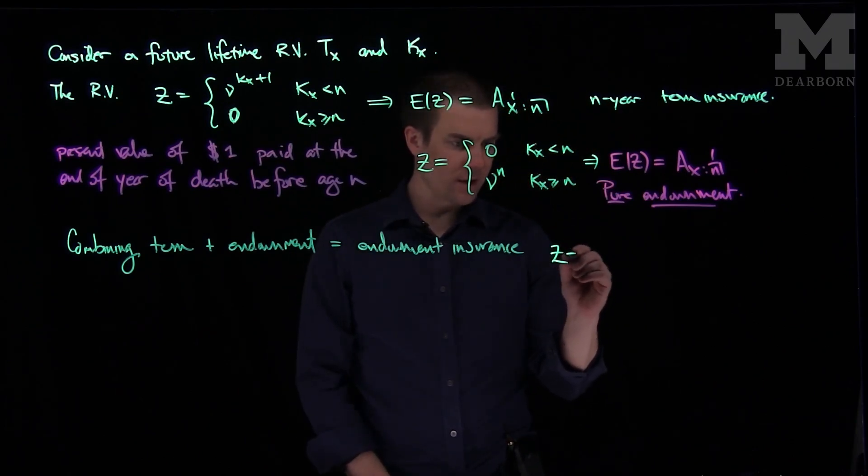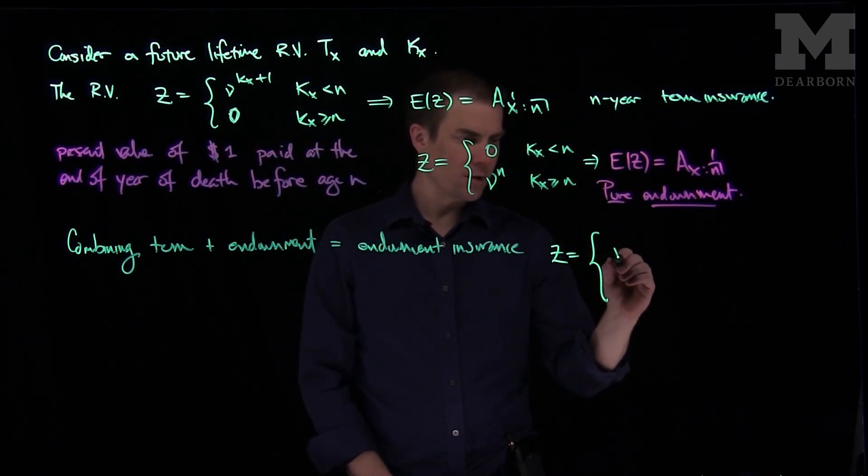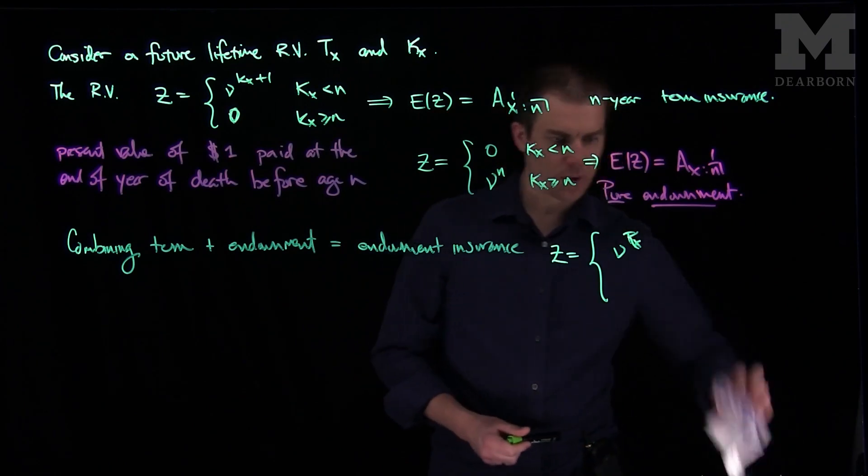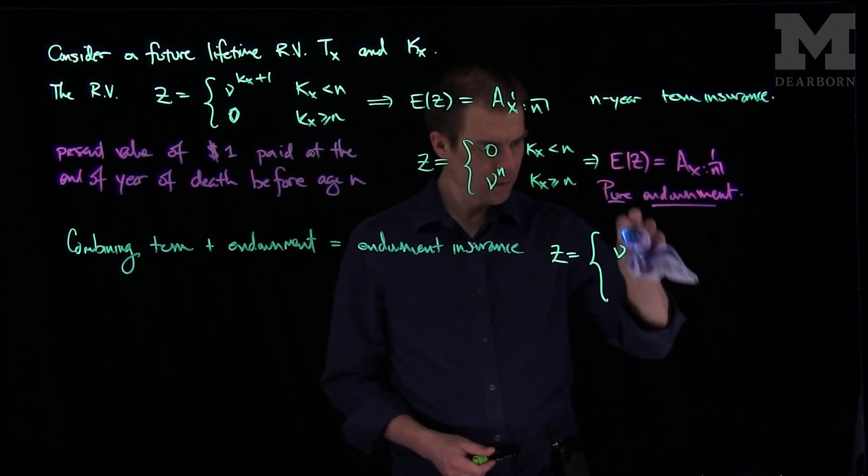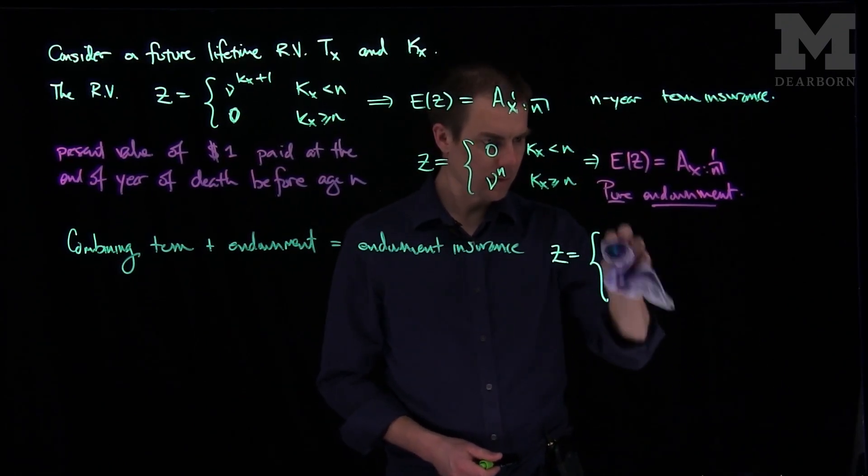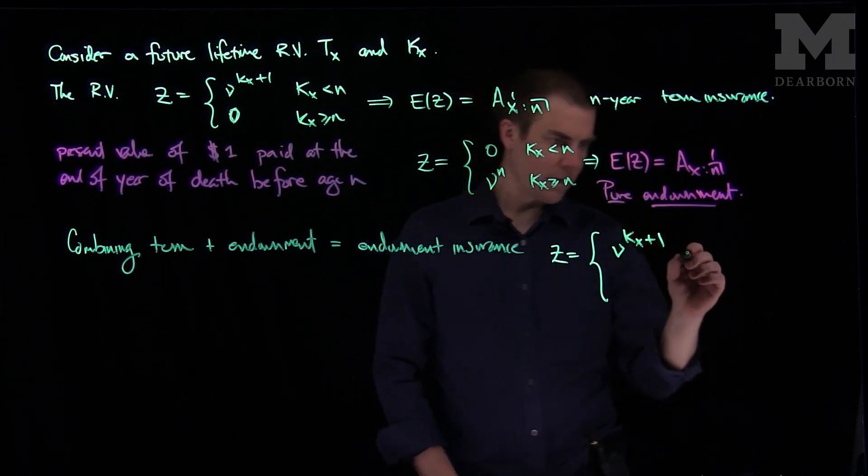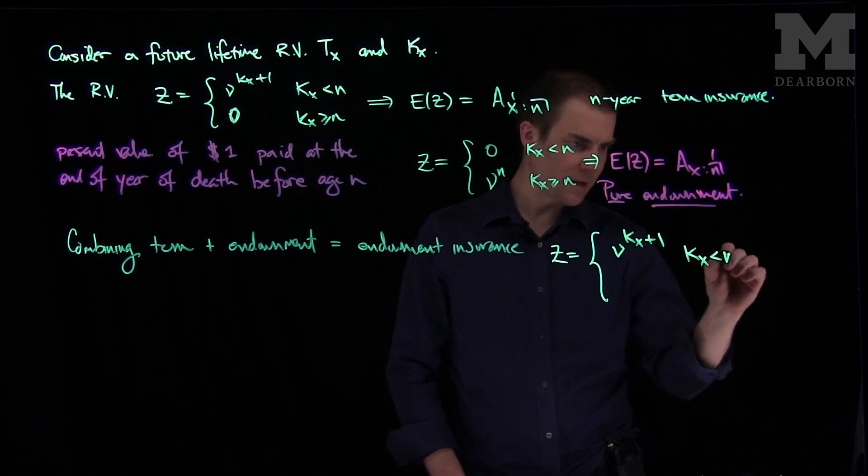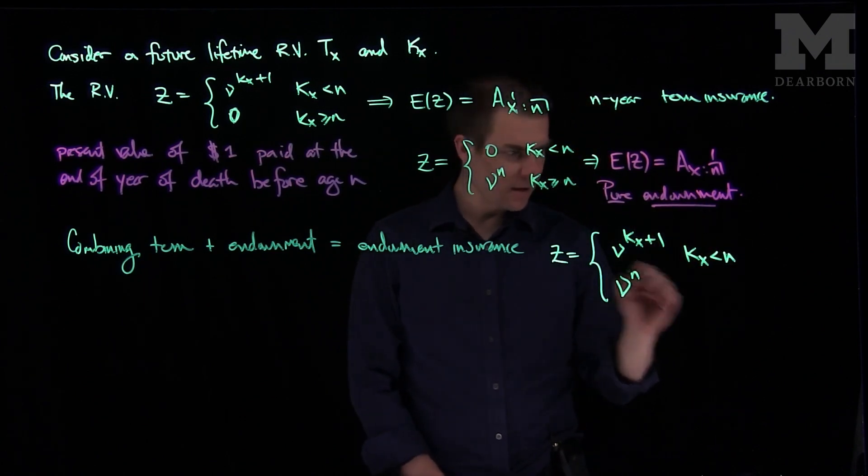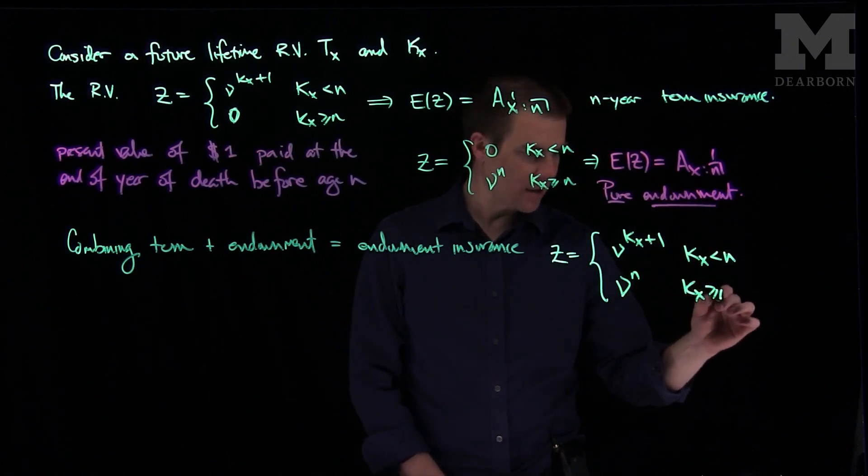Which is ν to the Tx, or kx for a curtate. So for our curtate functions, we get kx over here, kx plus 1, if kx is less than n, and ν to the n if kx is greater than or equal to n.